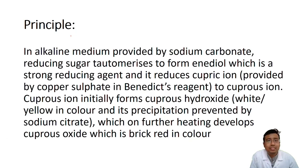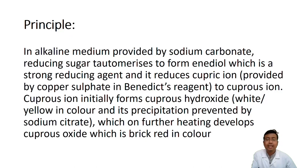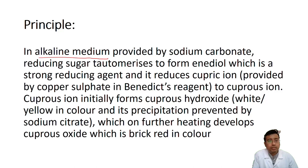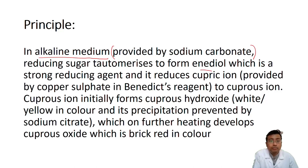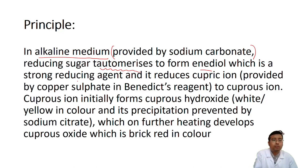Let us look into the principle of this test. We are trying to detect the presence of reducing sugars or reducing substances. In alkaline medium, which is provided by Na2CO3 (sodium carbonate), the reducing sugar tautomerizes to form an enediol. Tautomerism is an isomerism between the keto form and enol form. So the reducing sugar tautomerizes to form the enediol, which is actually the strong reducing agent. This is the first part of the reaction happening inside.